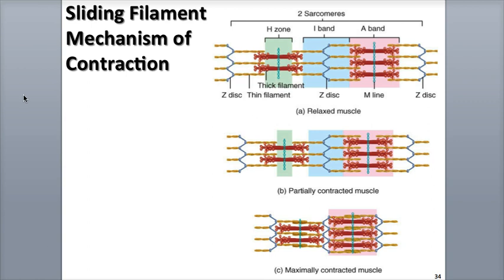When muscles contract, the myosin heads at both ends of the thick filaments attach to and pull the thin filaments toward the M-line as they slide toward the middle of the sarcomere. From a side view, the myosin heads are angled in a way that resembles the tail feathers of an arrow. Both the I-band, shown in blue, and the H-zone, shown in green, become more narrow as the thin filaments slide past the thick filaments and ultimately disappear during maximum muscle contraction.